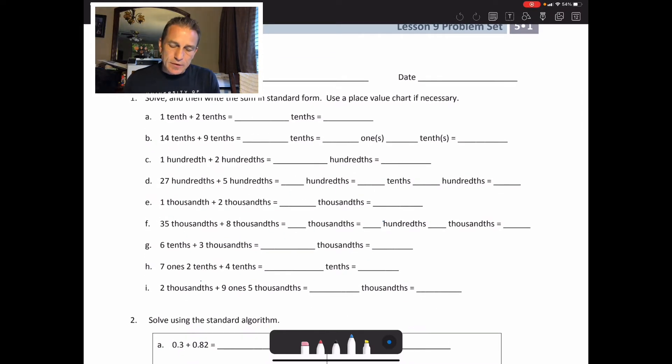So let's take a look. In problem A, we have 1 tenth plus 2 tenths. Your first thing is you're going to say how many tenths that is. So you're going to write 3 tenths. And then you're going to write in standard form what that equals. So you're going to write 3 tenths like that. So they start off with a really simple one.